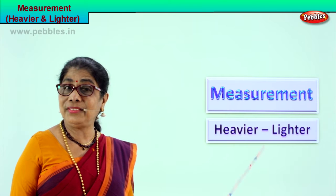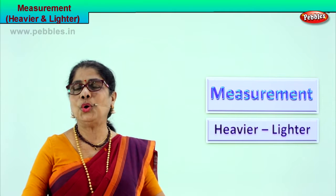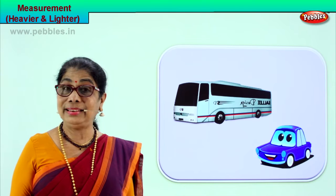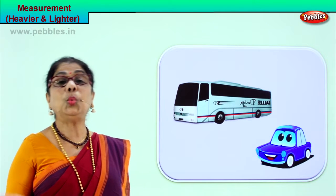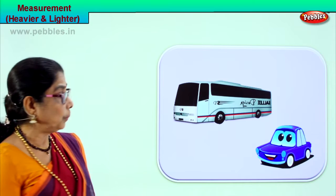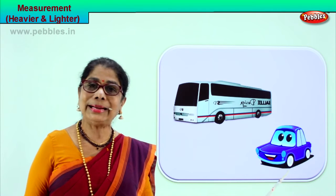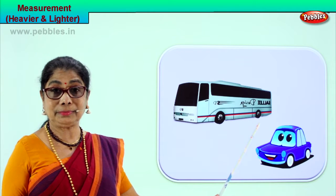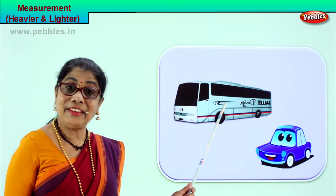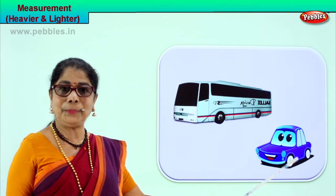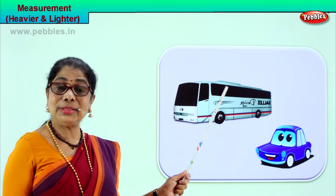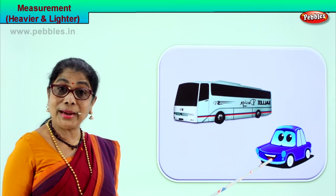So we look at the pictures today and try to understand lighter and heavier. Here is our first picture. You compare the two things and see for yourself. When you say heavier or lighter, we should put it on the weighing machine — a big, huge weighing machine. When you look at a tiny toy car and a huge bus, which do you think is heavier? Certainly the bus is heavier than the toy car, or the toy car is lighter than the bus.